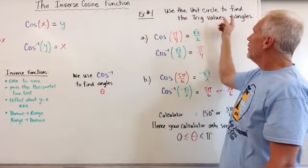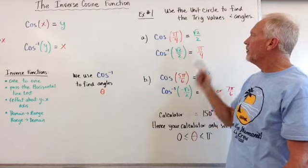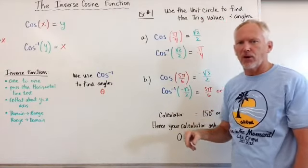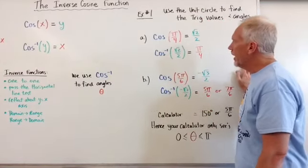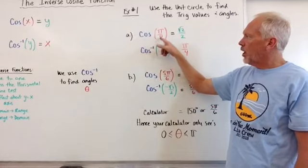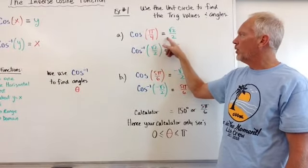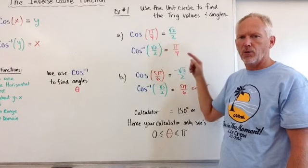Example 1, use the unit circle to find trig values and angles. A is the cosine of pi over 4. Well, this is an angle. What do we get out? We get square root of 2 over 2.